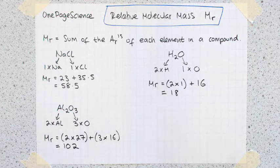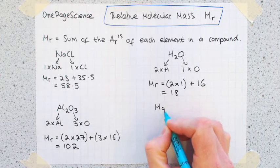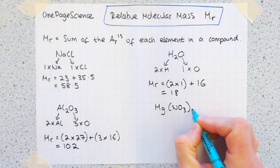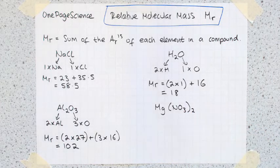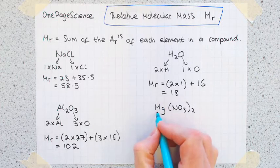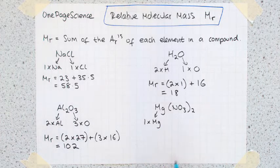Next example is about as hard as they get for GCSE, which is the example of magnesium nitrate, Mg(NO3)2, which has this strange looking formula. First thing we've got to do is work out the amount of each element that we've got. So magnesium is more straightforward, because we've only got one of them, one times magnesium.